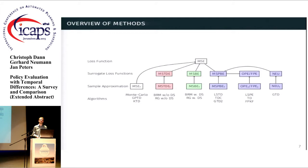But other algorithms first choose a surrogate loss function and build a sample approximation of this, and then minimize this one. And we will look into why it might be reasonable to choose a different loss function.